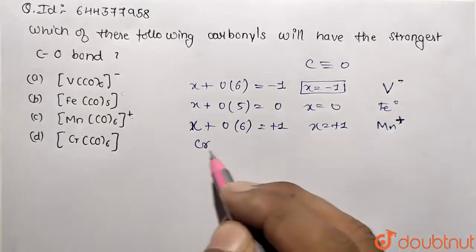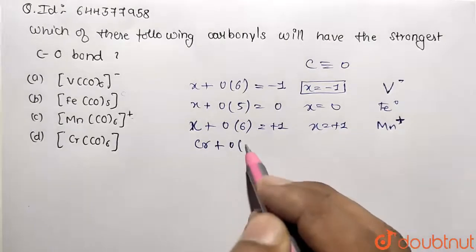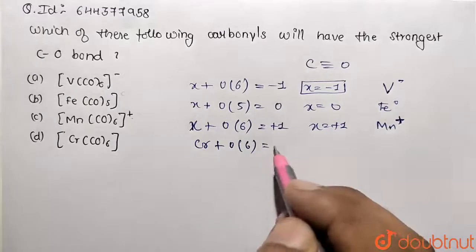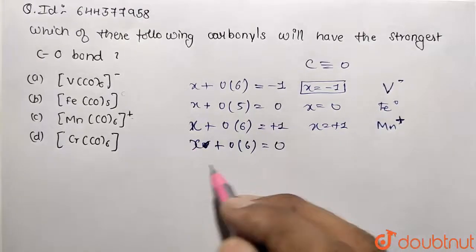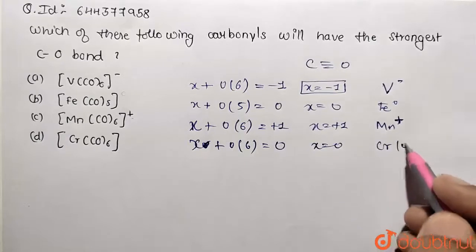That means manganese is present in positive oxidation state. And then we have chromium, we can take oxidation state x then carbonyl is neutral again 0 multiplied by 6 and overall charge not given so we assume it to be 0. So this turns out to be again in ground state.